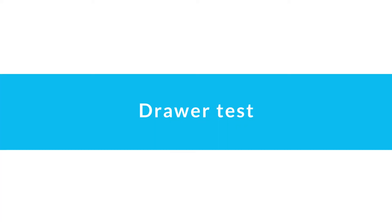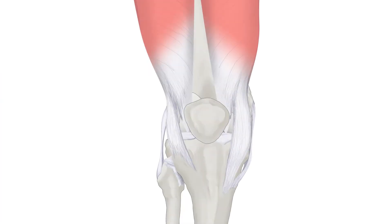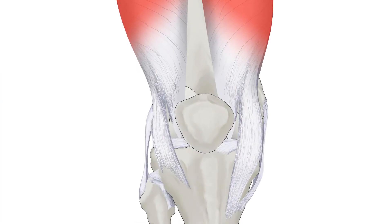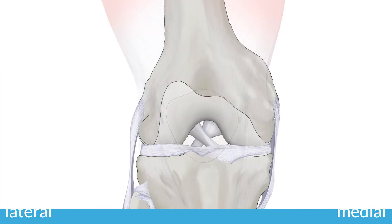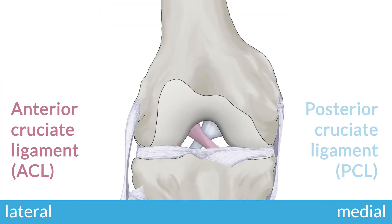The Drawer Test is used to assess the stability of the anterior cruciate ligament, or ACL, as well as the posterior cruciate ligament, or PCL.